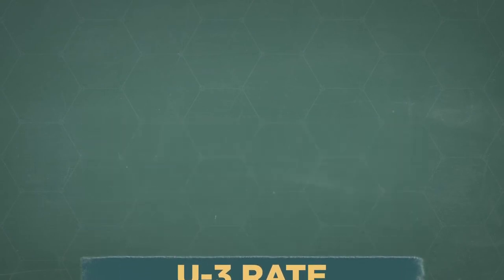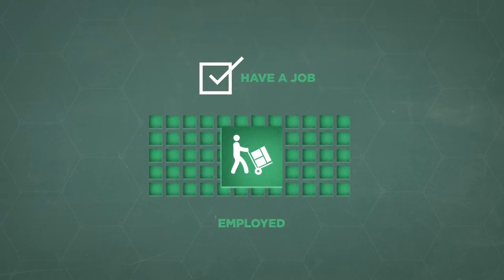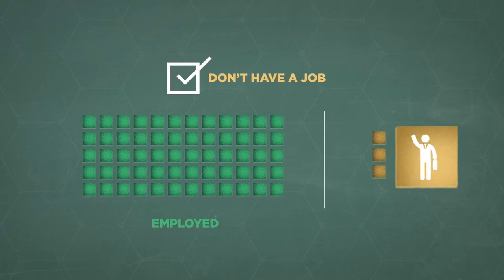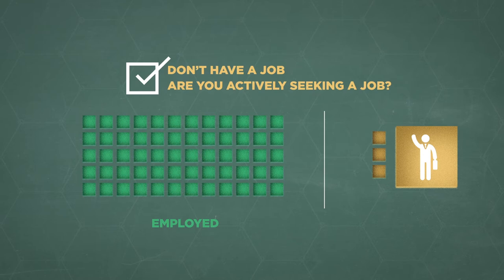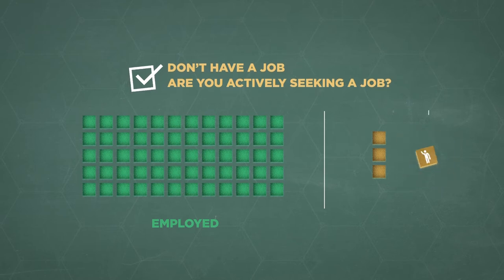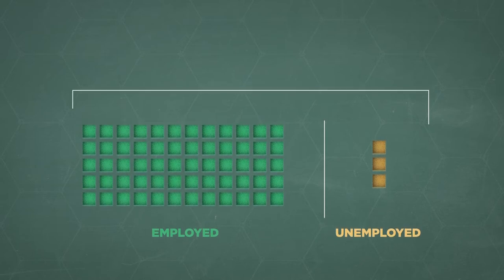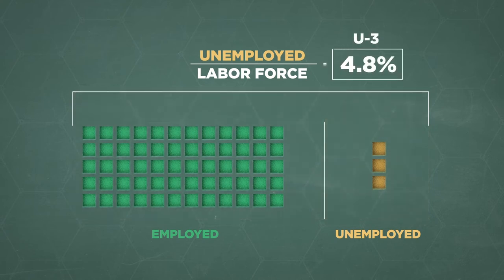Here's how it works. If you have a job, you're counted as employed. Don't have a job? Well, you're not unemployed yet — there's one follow-up: are you actively seeking a job? If the answer to both of those is yes, then you were unemployed under the official definition. Together, the employed and unemployed form the labor force. The number of unemployed is divided by the labor force, and that's U3, the official unemployment rate.